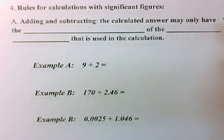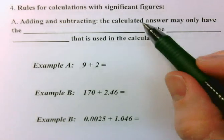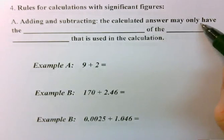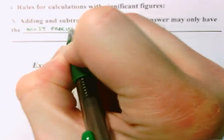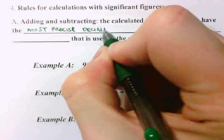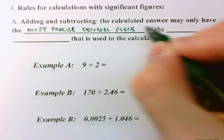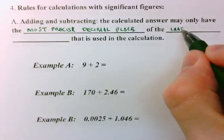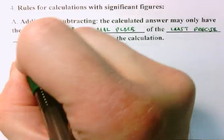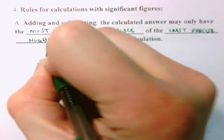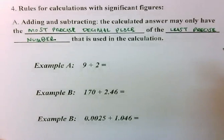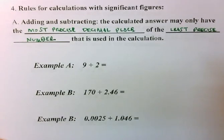So with that in mind, here's the rule for adding and subtracting. Our calculated answer may only have the most precise decimal place of the least precise number that is used in the calculation. So again, the calculated answer may only have the most precise decimal place of the least precise number that is used in the calculation.